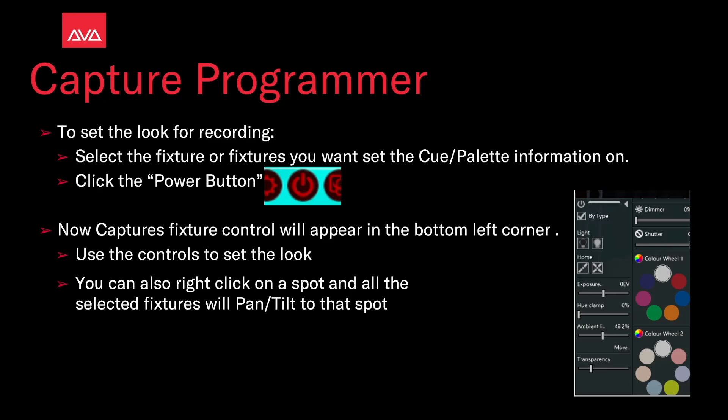Set the look for recording. Select the fixture or fixtures you want to set the Cue or Palette information on, then click the Power button. The Capture fixture control window will appear in the bottom left corner. You can use the controls to set the look. You can also right-click on a spot in the Capture view and all the selected fixtures will pan and tilt to that spot.